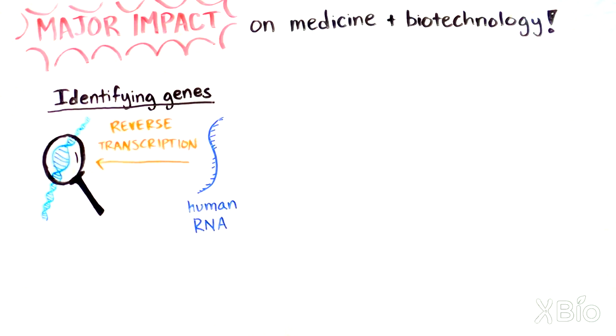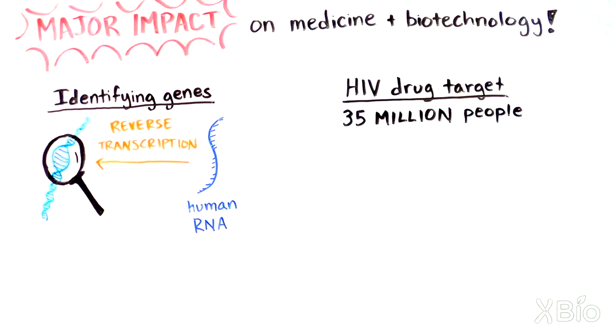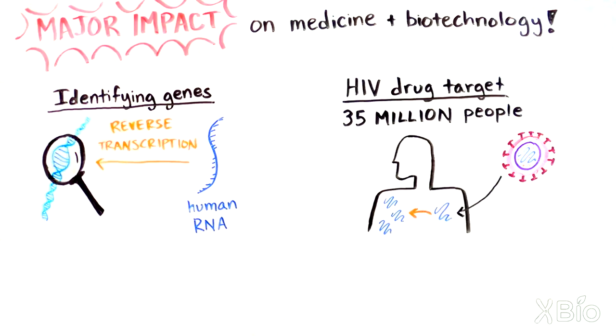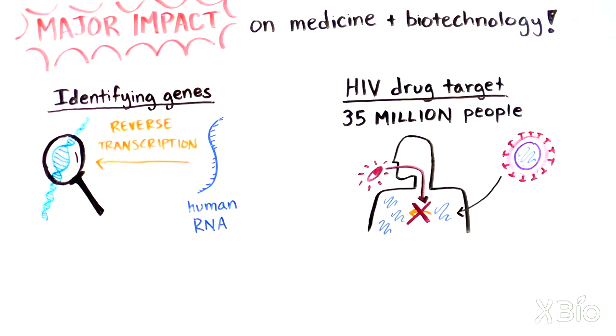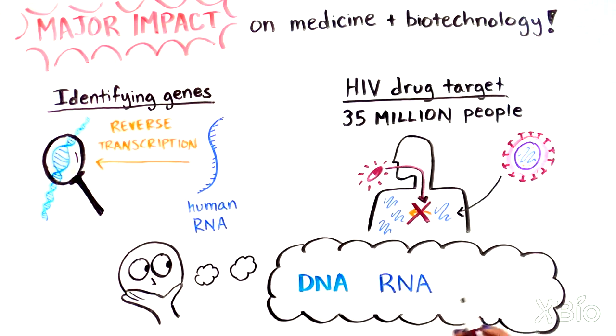Another important example is HIV, the retrovirus that causes AIDS and affects 35 million people worldwide. HIV uses reverse transcriptase to replicate and spread. Thanks to Baltimore and Temin's discovery, physicians now use medicines that block reverse transcriptase to treat patients with HIV. And all of this from questioning the dogma.